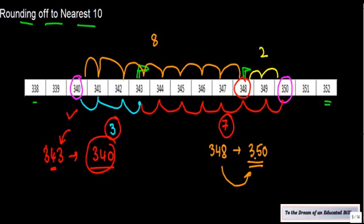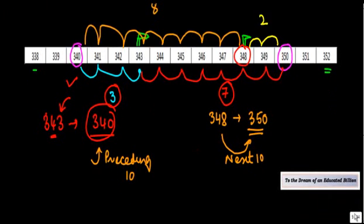The general rule is, let me call this as the preceding 10 and this as the next 10 or the succeeding 10. The general rule is that if at units place you have one, two, three, or four you round it off to the preceding 10.